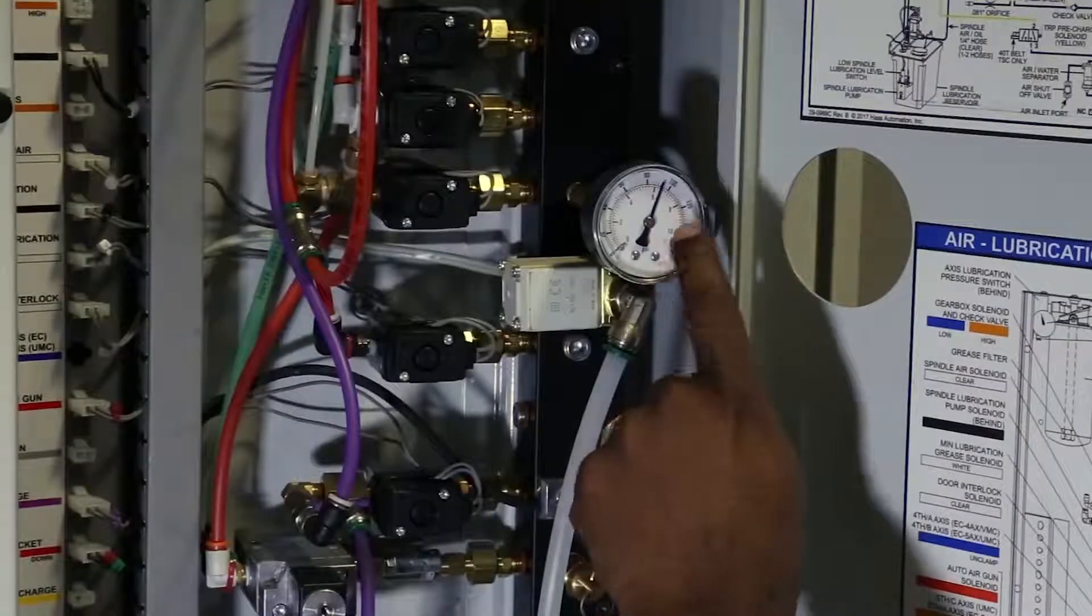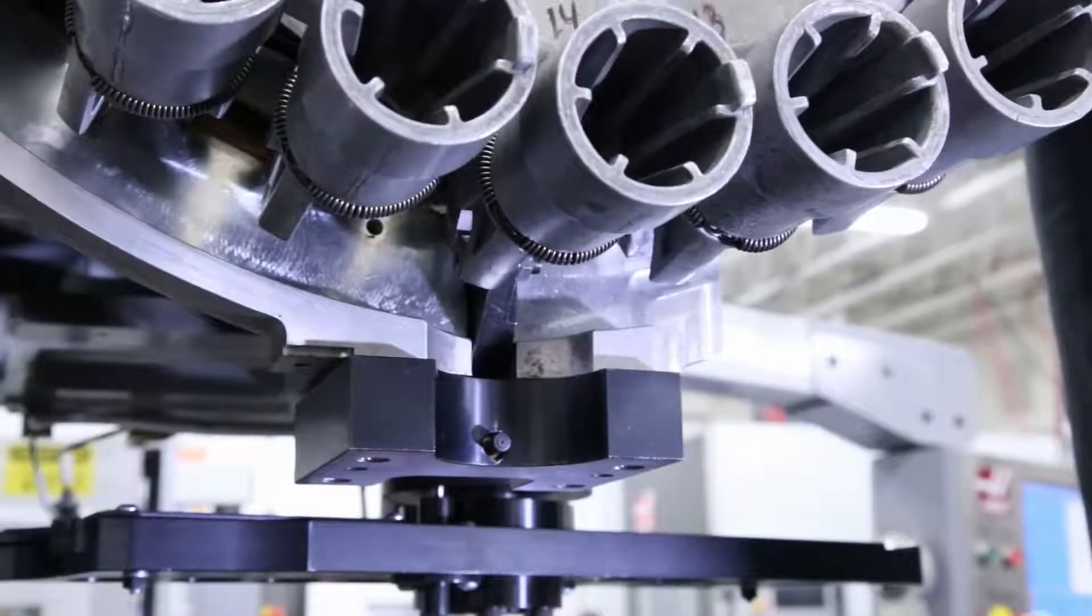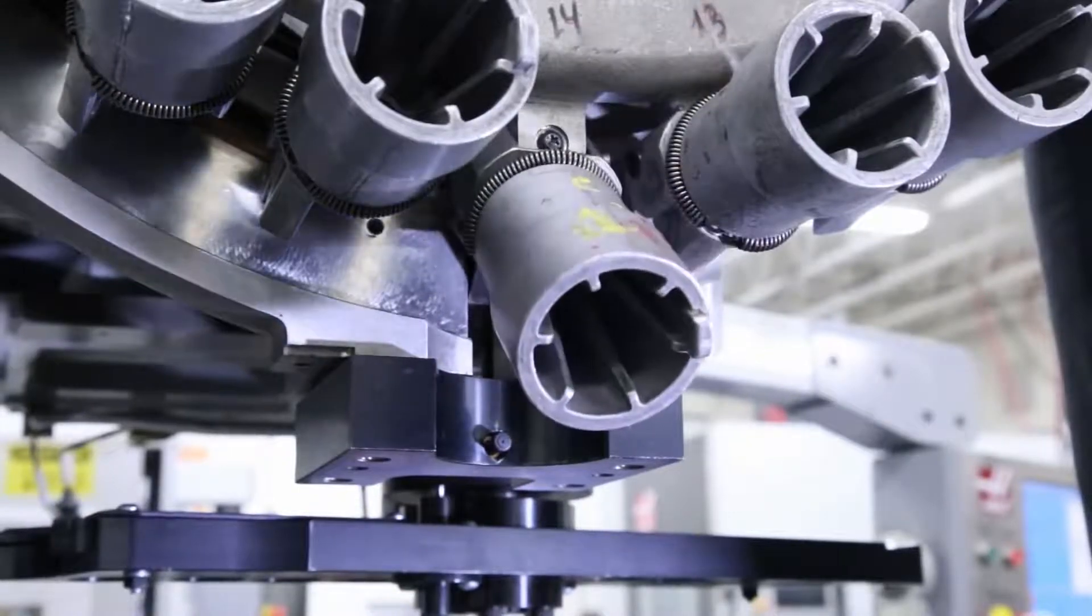Make sure the machine has sufficient air pressure and volume during the tool change. Low air can prevent the tool pocket from reaching the proper position.